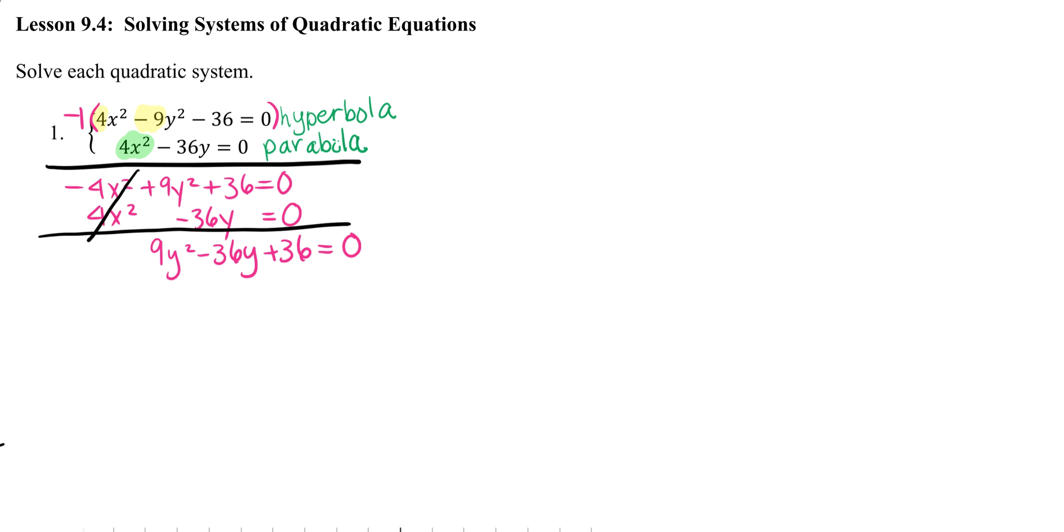Now I can simply solve this quadratic in terms of the one variable y and find the y value. So everything is divisible by 9. Let's divide by 9. y squared minus 4y plus 4 equals 0.